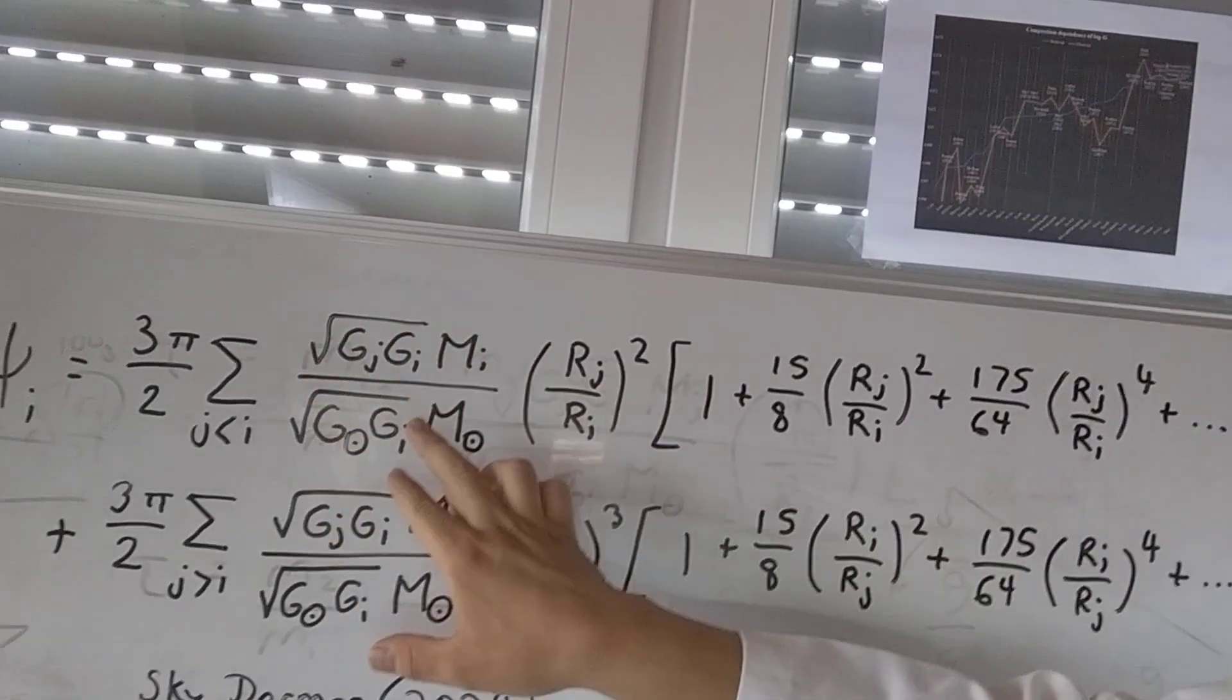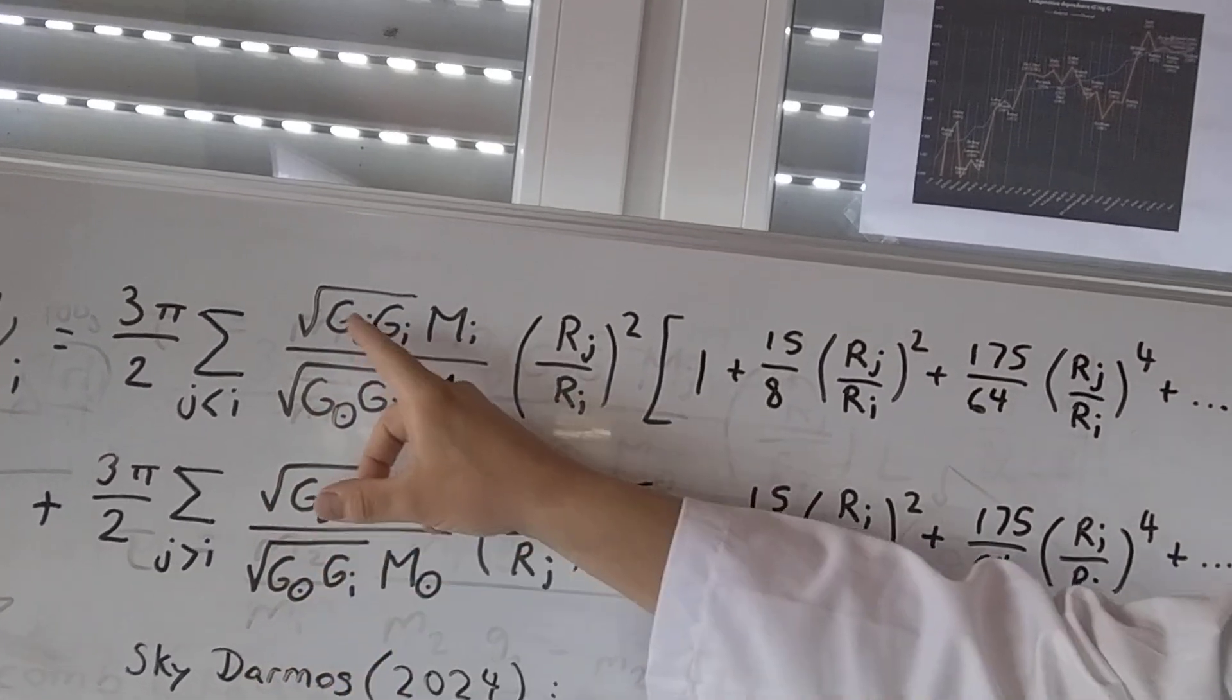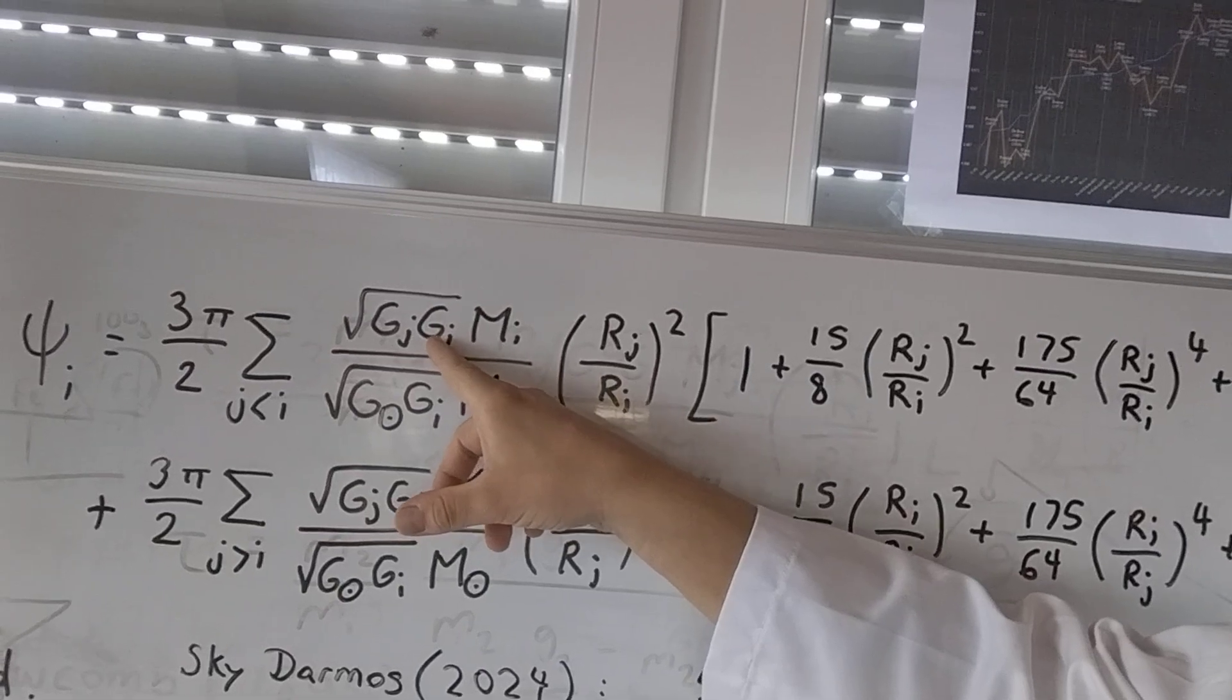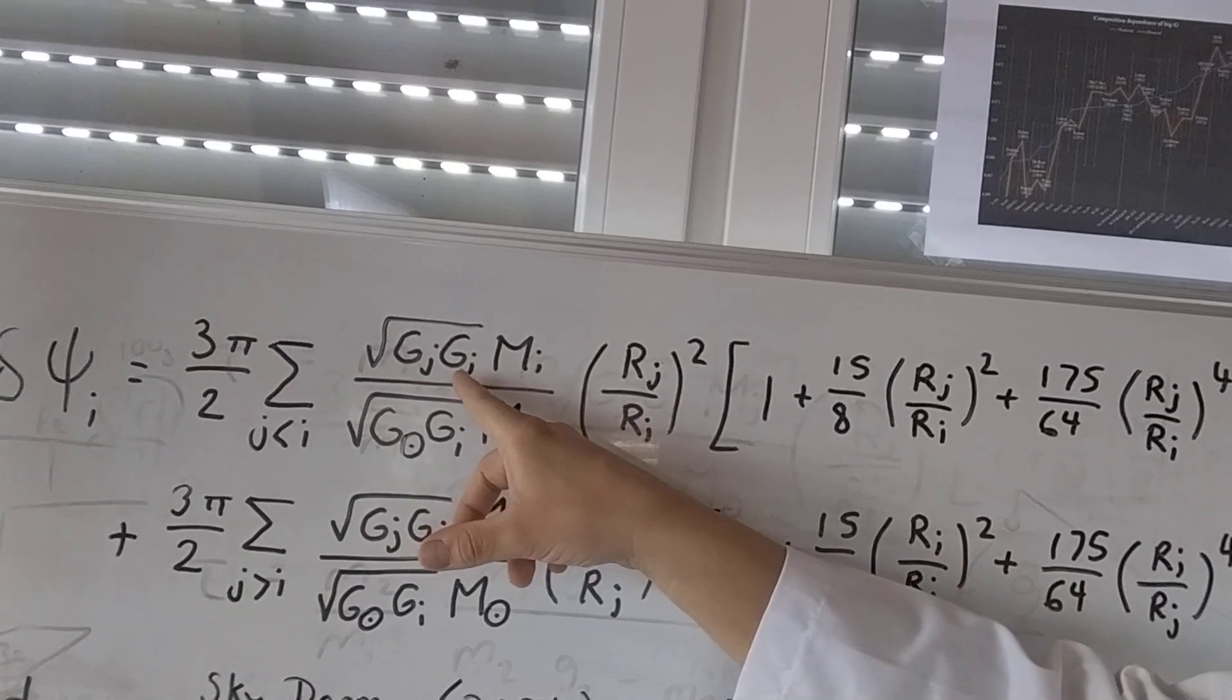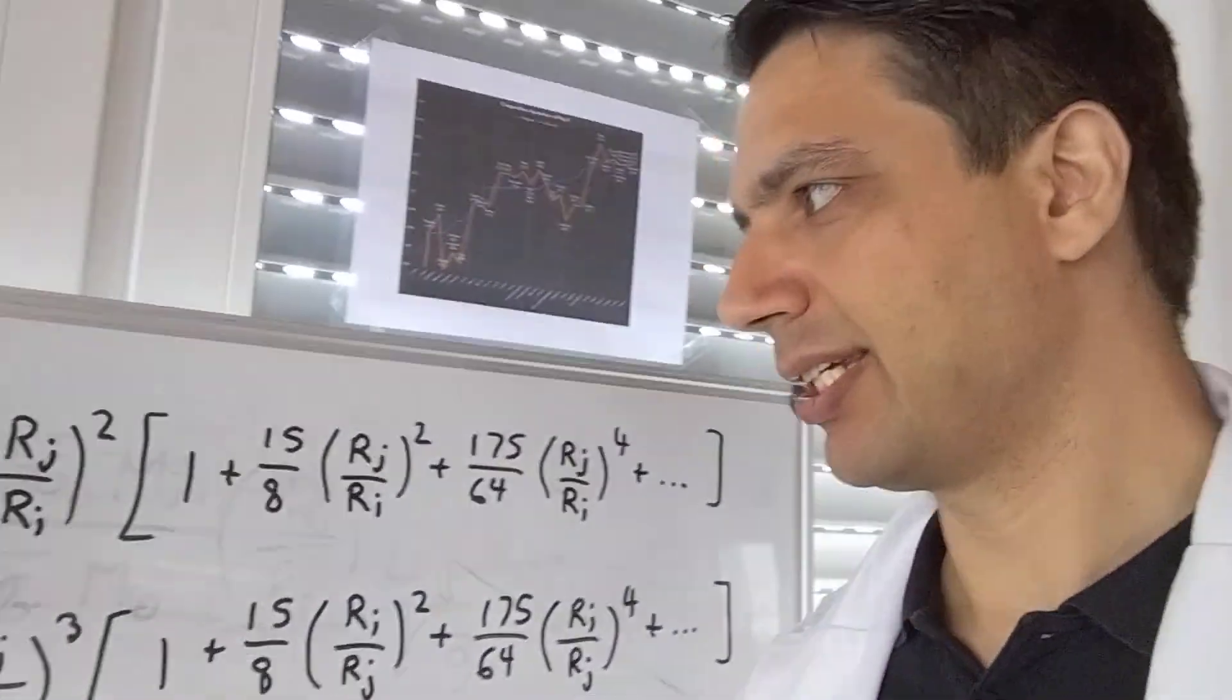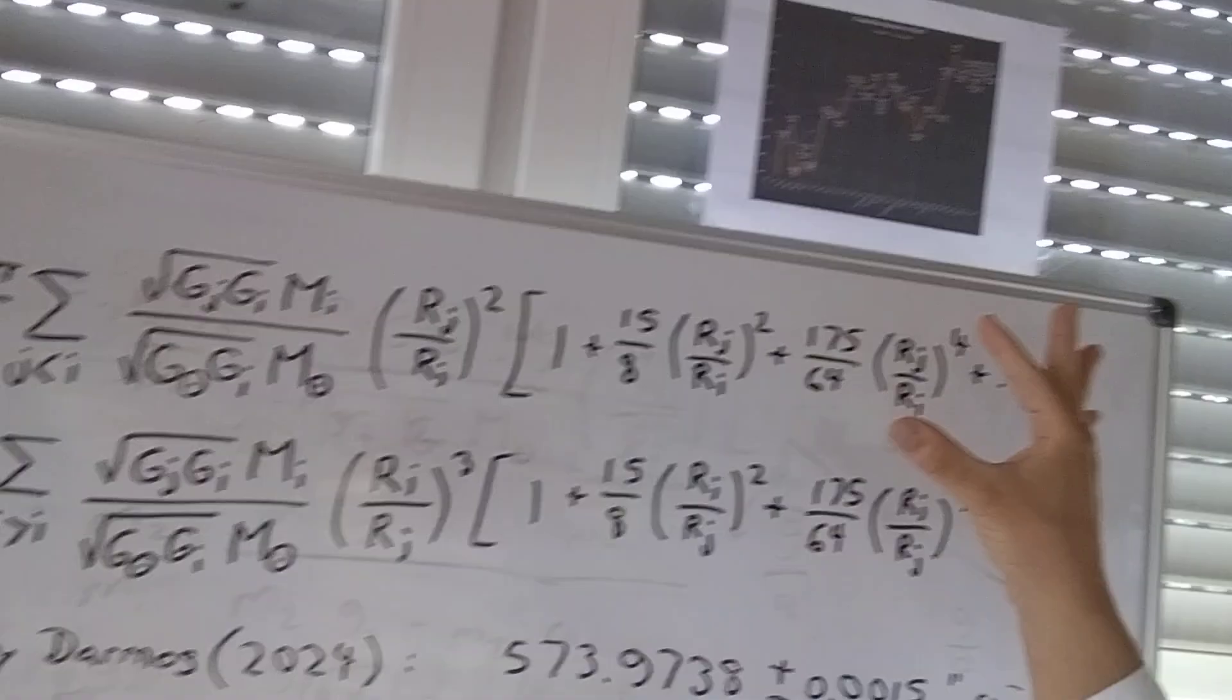This element here is specific to my gravity theory. So here you have the planet i, which is the planet of interest, in this case Mercury, and j is the influencing planet. And of course we add up all the influences of the different planets.